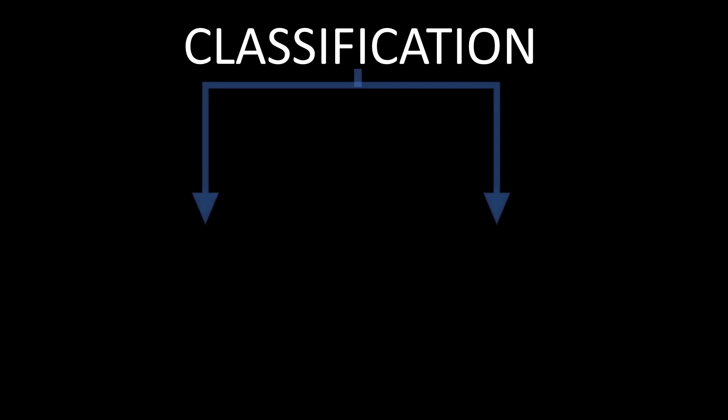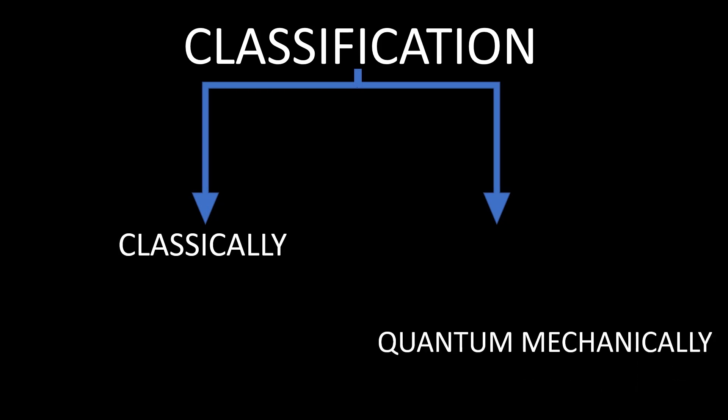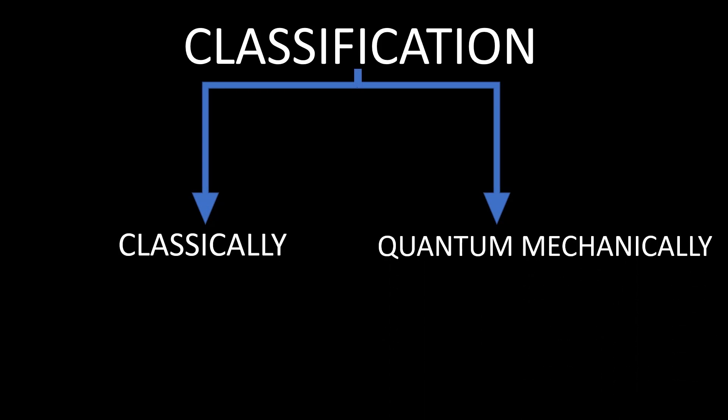Statistical mechanics is basically the study of a large number of microscopic particles. And with large number I mean large — that means 1 followed by 23 zeros number of particles. Now to study something we need to classify it. So any microscopic system can be statistically classified in two ways: one classically and the other quantum mechanically.